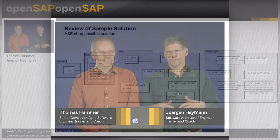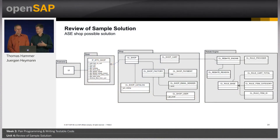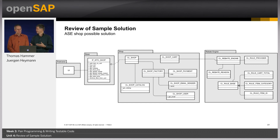Hi, and welcome to Week 3, Unit 4, where we will look at the sample solution of the rebate engine code. We don't want to look at the code itself because we showed you the code to begin with, and every implementation is different, but the most important structural elements you have seen in the beginning anyway. I want to show you a class diagram to show what are the main elements and what they roughly look like.